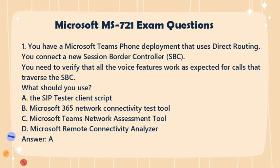Question 1. You have a Microsoft Teams phone deployment that uses direct routing. You connect a new session border controller (SBC). You need to verify that all the voice features work as expected for calls that traverse the SBC. What should you use? a. The SIP Tester Client Script. b. Microsoft 365 Network Connectivity Test Tool. c. Microsoft Teams Network Assessment Tool. d. Microsoft Remote Connectivity Analyzer. Answer: a.